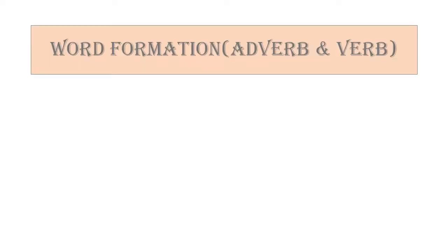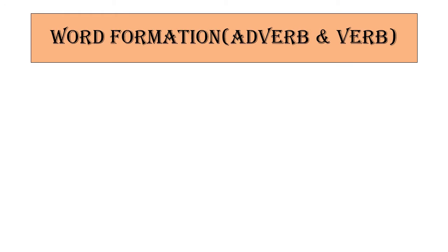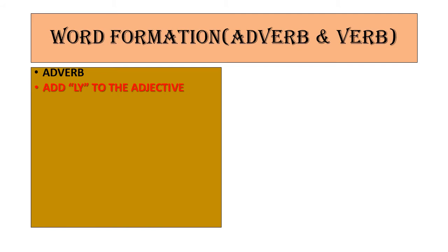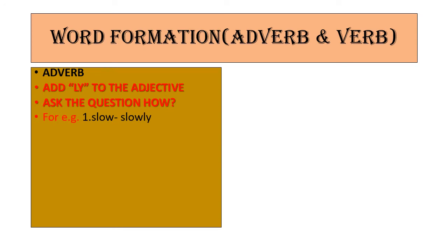To convert a word to adverb form, add '-ly' to the adjective and ask the question 'how'. But not every adverb ends in '-ly' — there are many exceptions. For example: good becomes well, past stays past, hard stays hard, late stays late. These words are not always adverbs; they can also be verbs. You need to read the sentence carefully to determine whether the word is being used as an adverb or not.